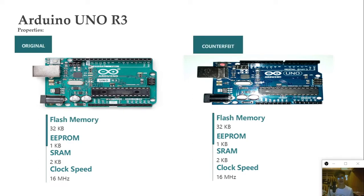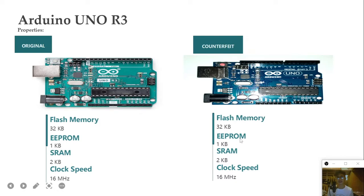For its properties, there is no difference between the original and counterfeit. Flash memory is 32 KB for both. EEPROM is 1 KB for both. SRAM is 2 KB for both. Clock speed is 16 MHz for both the original and the counterfeit.